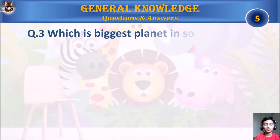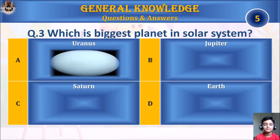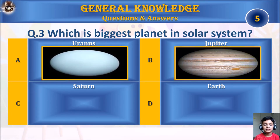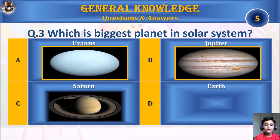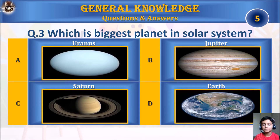Question 3: Which is the biggest planet in our solar system? A. Uranus, B. Jupiter, C. Saturn, or D. Earth. Your time starts.